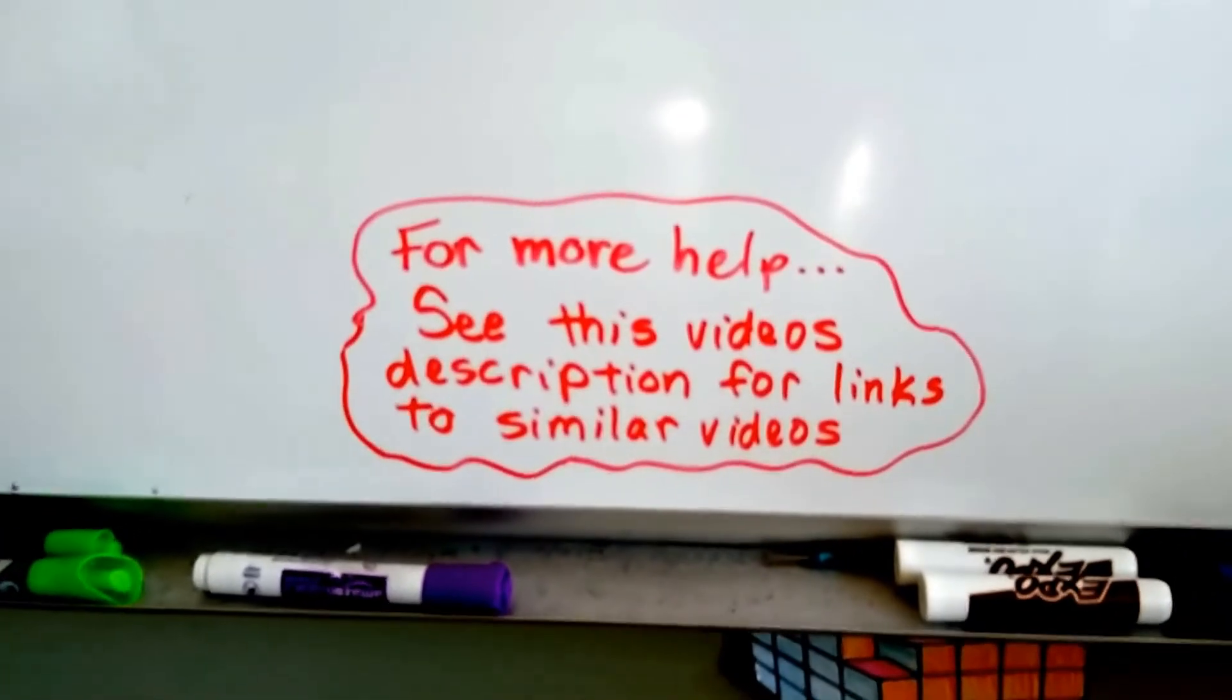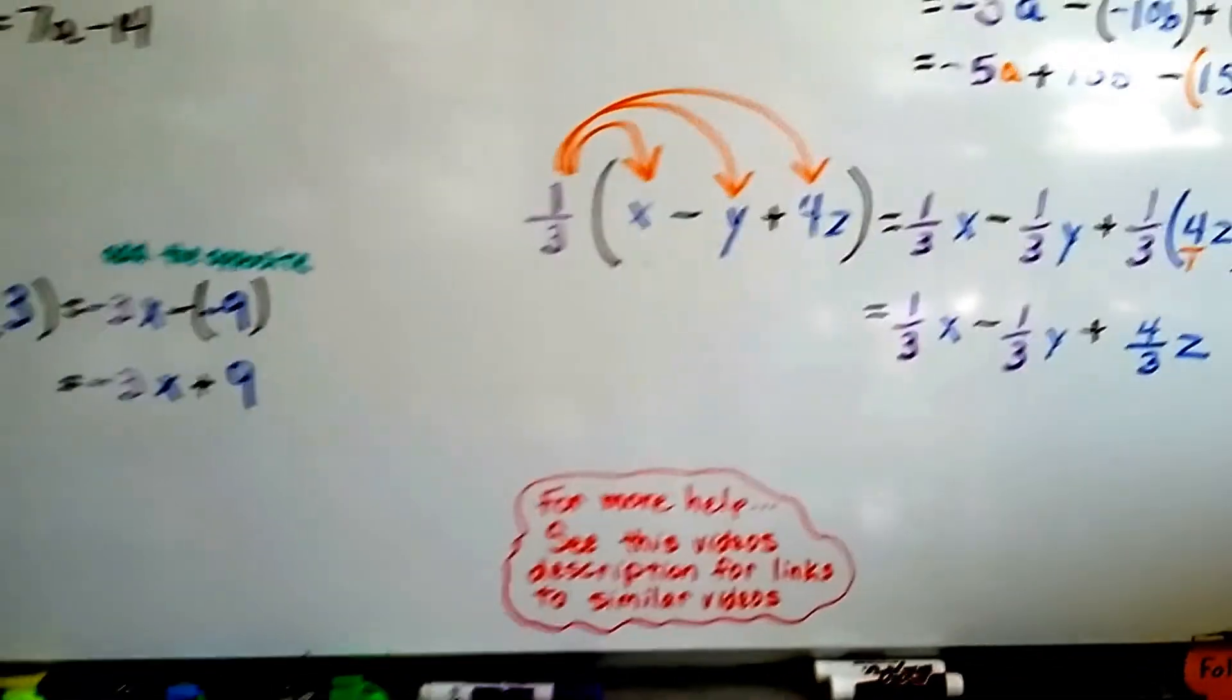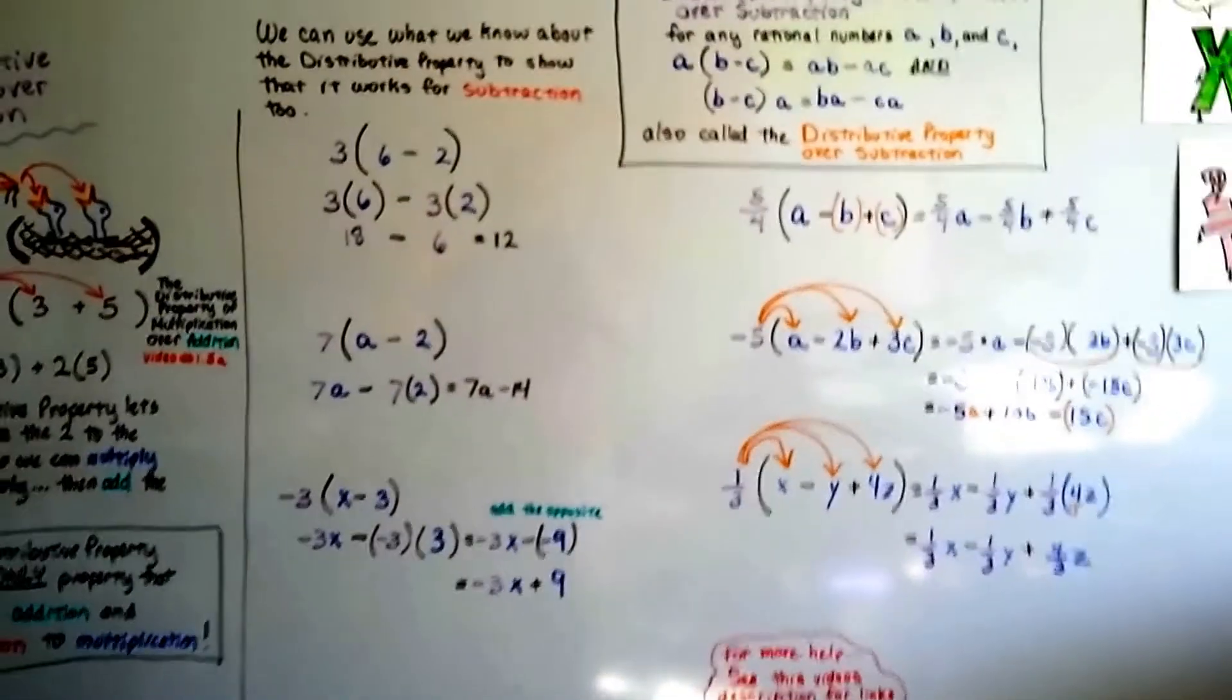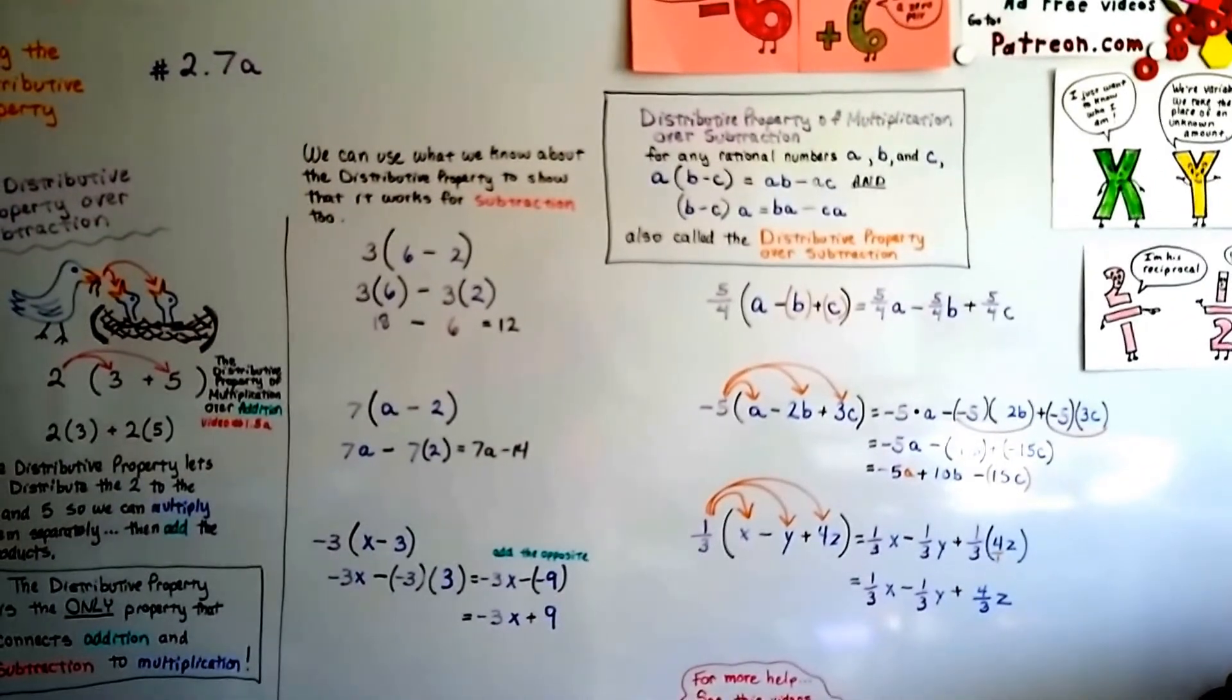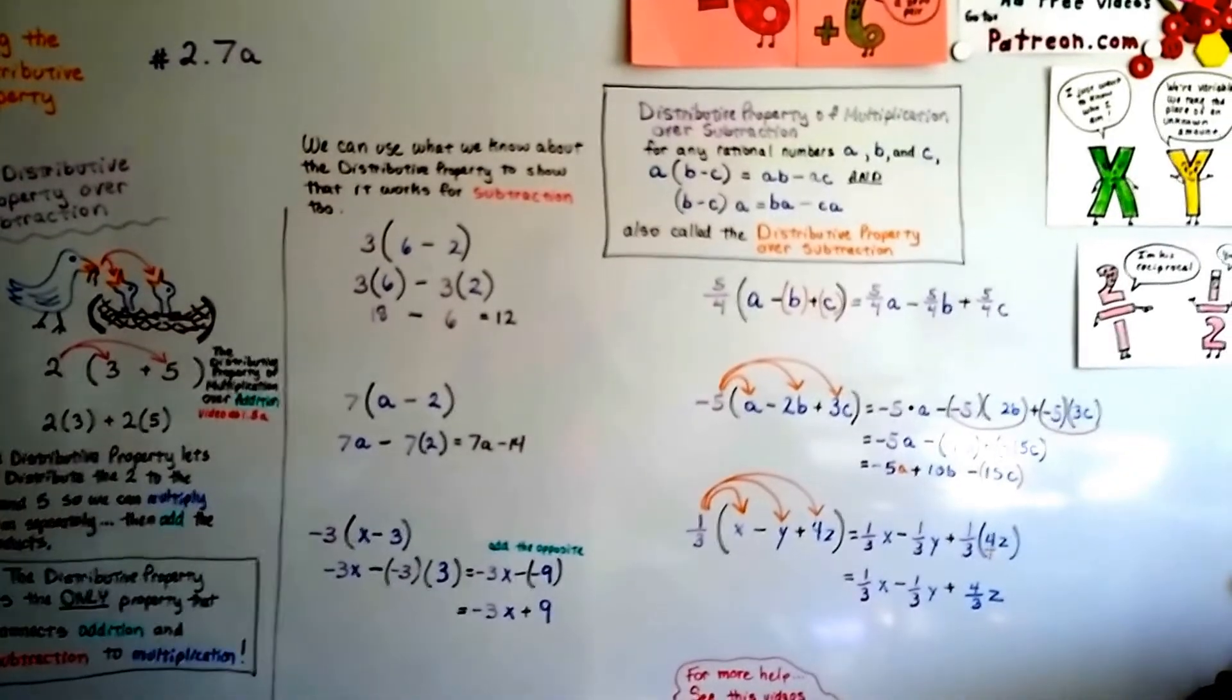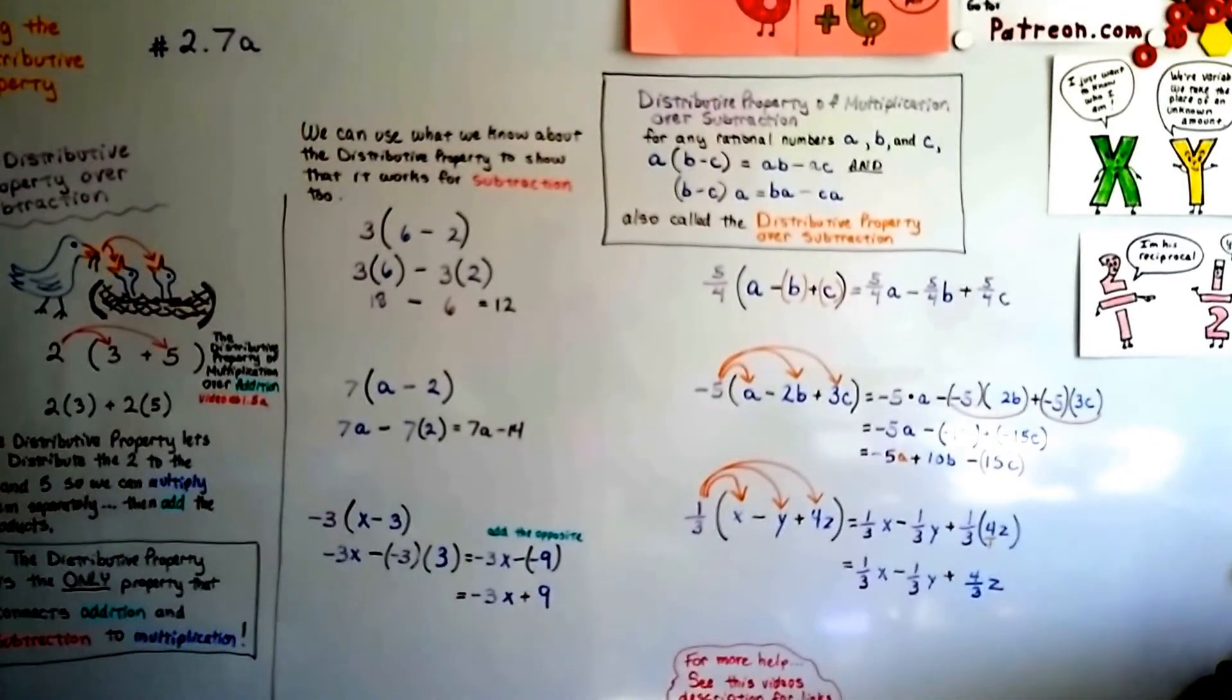Remember, in this video description, there's links to similar videos that can give you more help. And I hope I explained this well enough that you won't need that, but if you do, they're there. So that is the distributive property over subtraction. It's just like the over addition one, but we're subtracting in this case. I'll see you in 2.7b. Keep trying, keep up the good work. We can do this together. Bye.